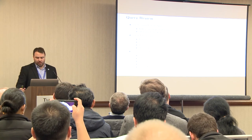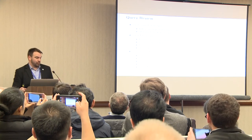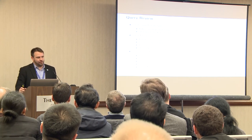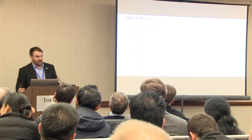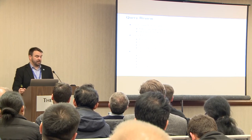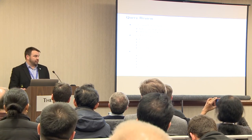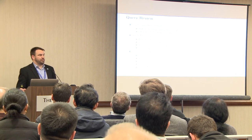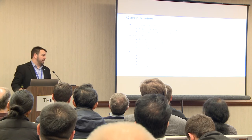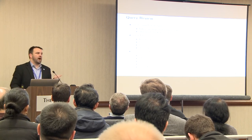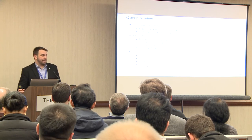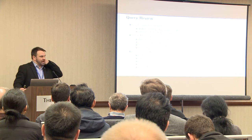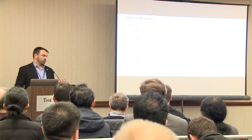SELECT COUNT(*) is very common. One way to make it fast is to have an index — count(*) will use an index-only scan, which is typically a lot smaller than scanning the heap. But if you don't have a visibility map or it isn't current, we end up going back to the heap to check visibility information. Keep your visibility maps current. There are other approaches like a side table updated with triggers.